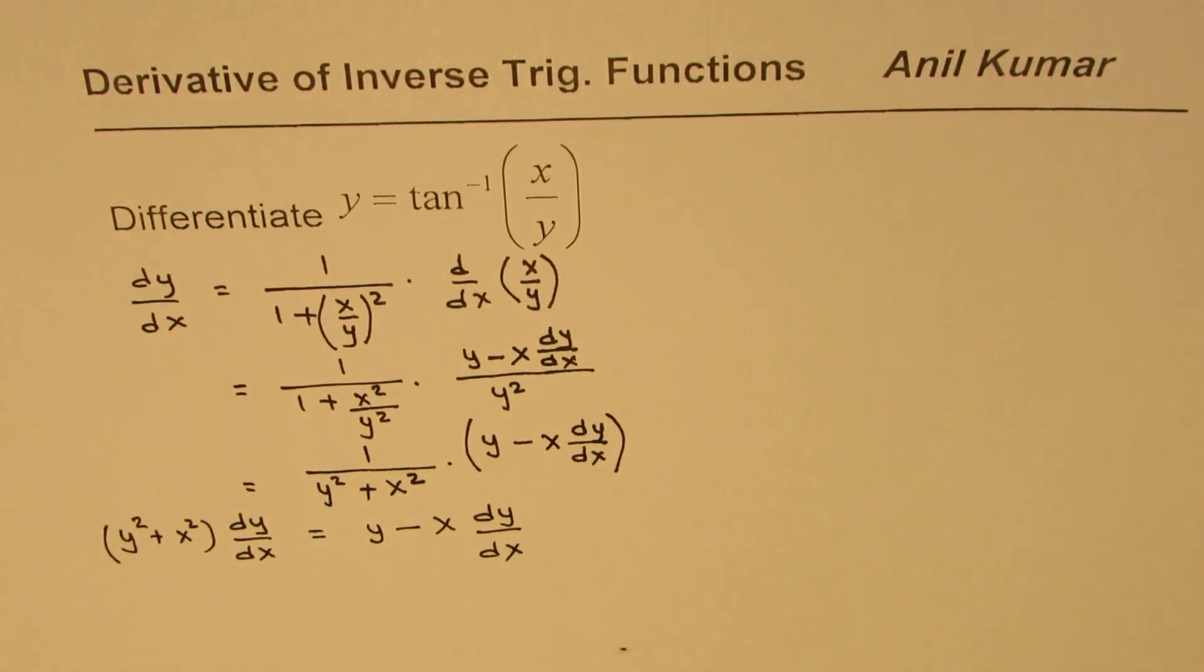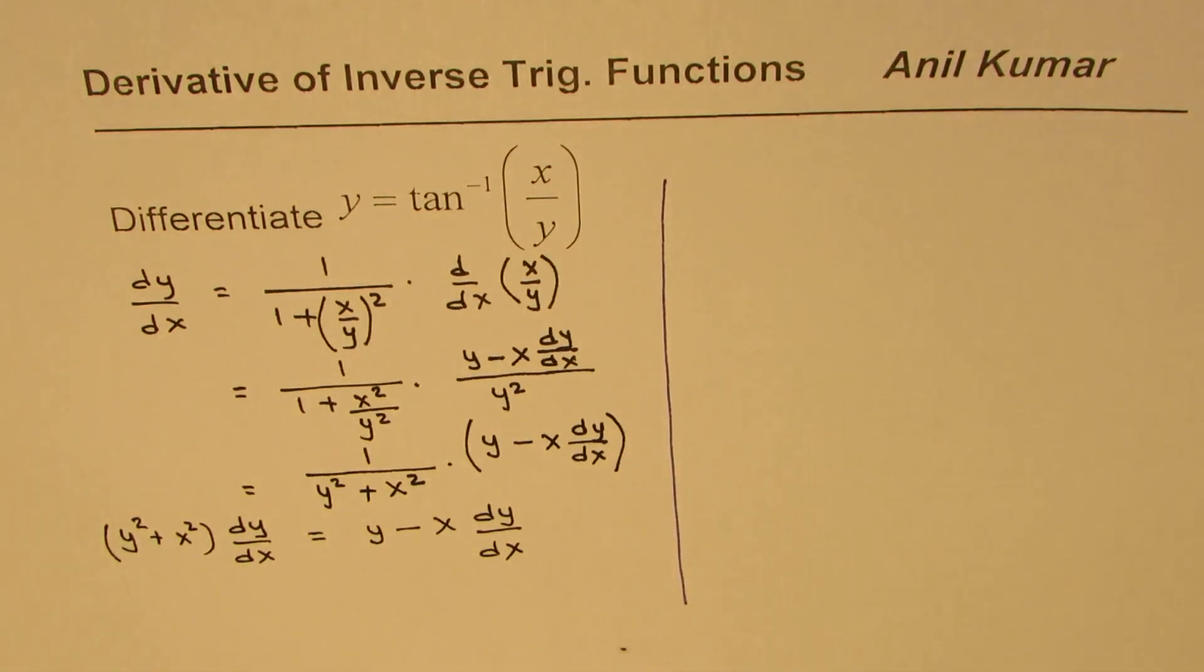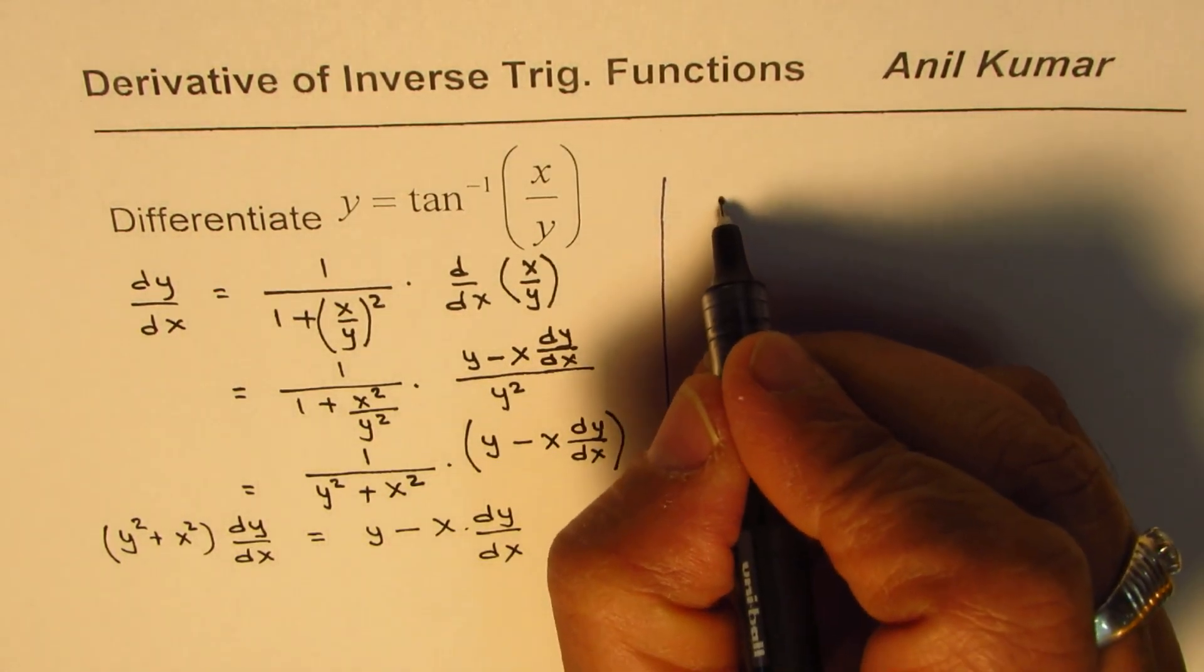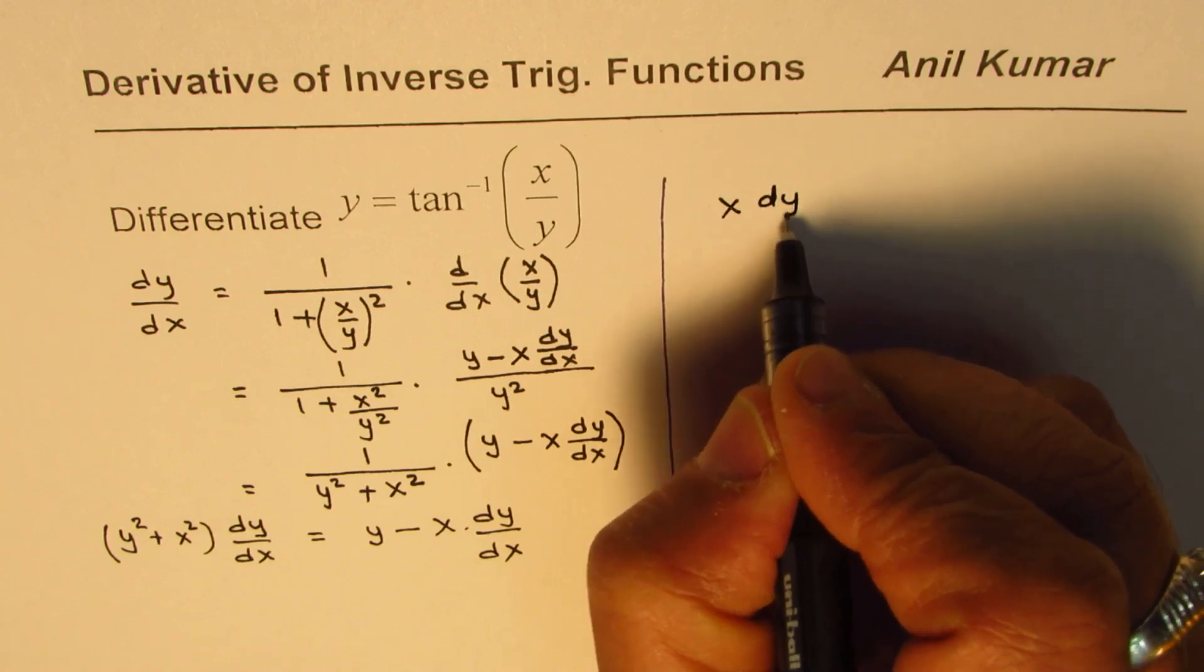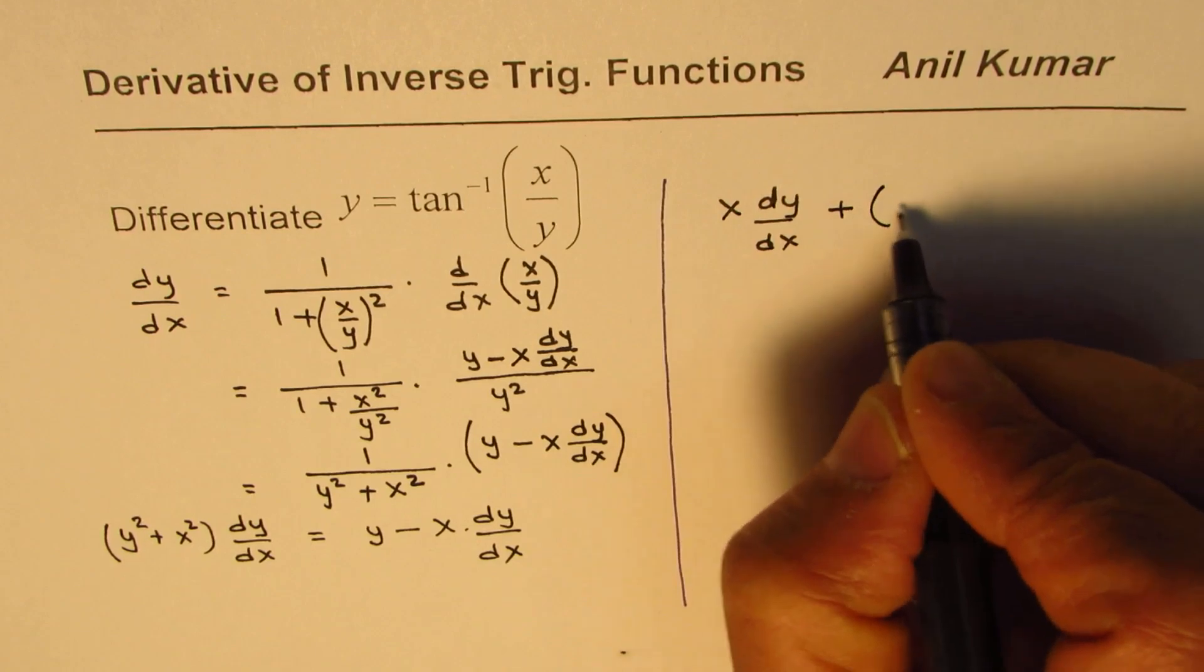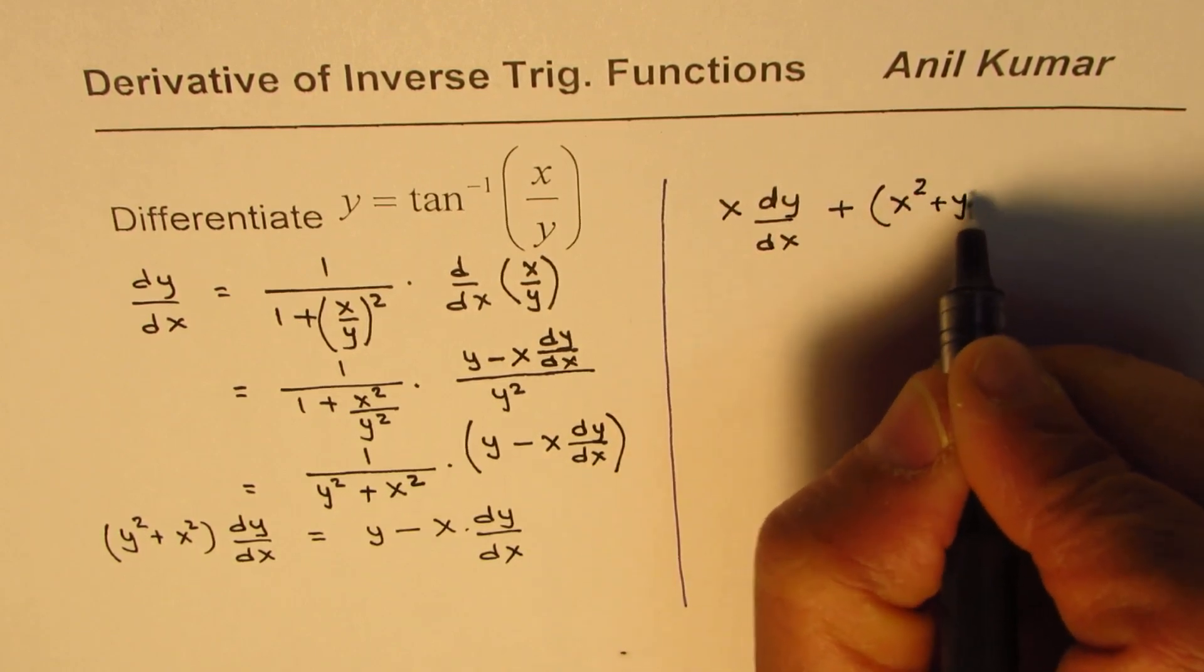So now we can take dy/dx terms on one side, rearrange, and then find the derivative. Taking these terms on the left side, we get x dy/dx plus x squared plus y squared dy/dx equals to y.